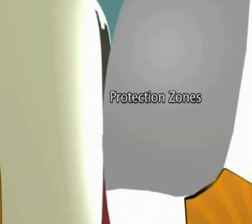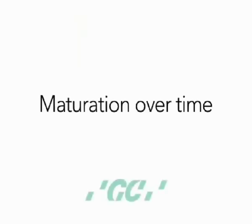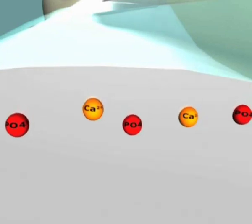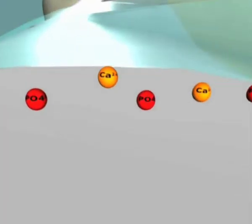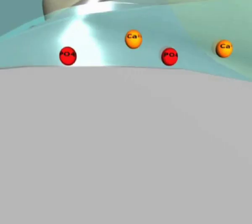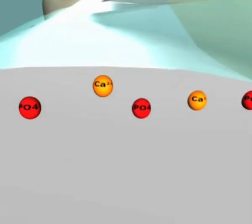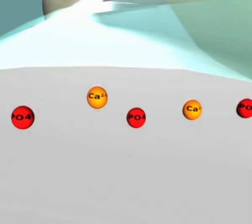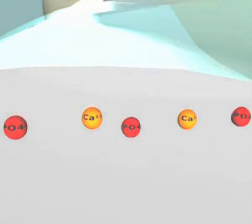Glass ionomer cements therefore create zones of protection for surrounding tooth surfaces. Glass ionomer cements mature over time; however, their final strength is further enhanced by exposure to saliva after their initial setting reaction. Calcium and phosphate ions from saliva are able to penetrate into the set glass ionomer matrix, and this uptake further hardens the cement structure.